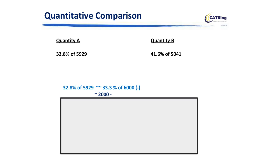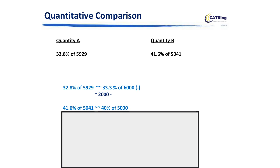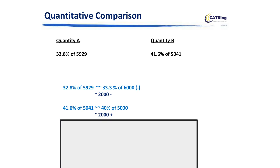Now let's come to quantity B. Here it is 41.6% of 5041. I'll approximate to 40% of 5000. So if I take 40% of 5000, it's going to be 2000, but it should be something higher because I reduced the values, so it becomes 2000 plus.